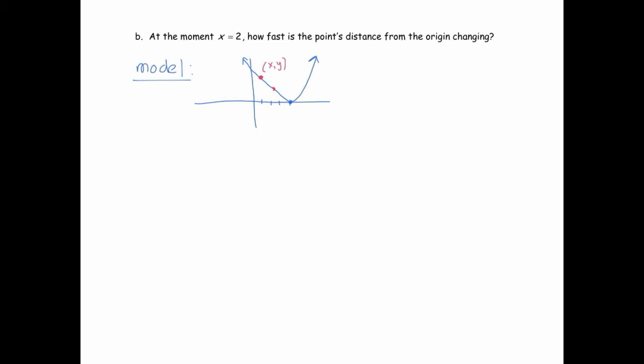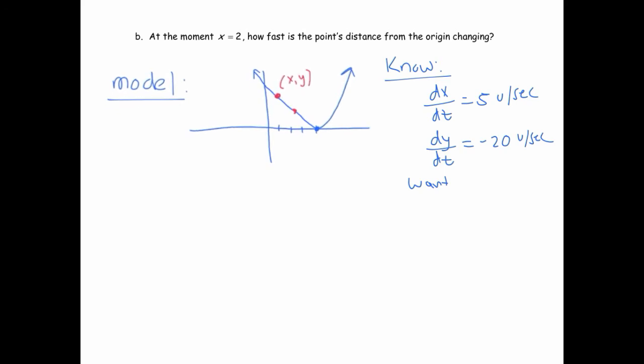So again, let's just note what we know. We know that dx/dt is 5. And we know that, we just found dy/dt, so we might as well note that. We know that dy/dt at this instant is negative 20 units per second. And so what we want is, well, I should come up with a variable first, right? So let's make this bigger. And let's call, this is when x is 2. That's where the point would be. So this here, that's the distance from the origin. Let's call that L. We want to know dL/dt when x equals 2.